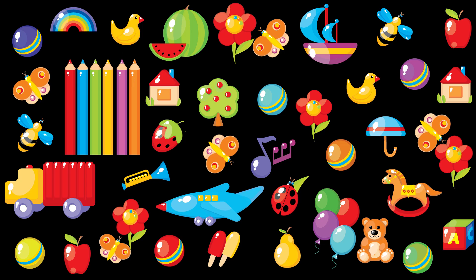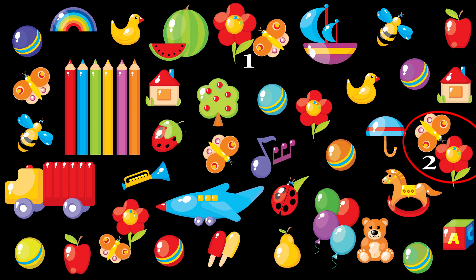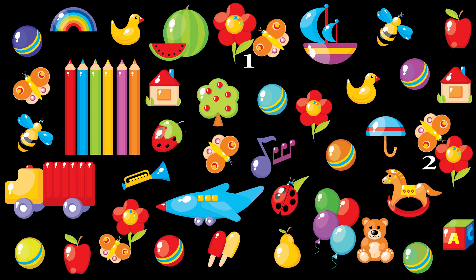Now for the fourth question: how many times is a butterfly next to a flower? This is a tricky one. Let's do this together. Here there's a butterfly but it's not next to a flower, so let's ignore that one. Here we have one, and there's a second one. Now here's a flower but without the butterfly, so we'll ignore this one too. And we have a third one here, so there is a butterfly next to a flower — that's three. Three times in this picture.